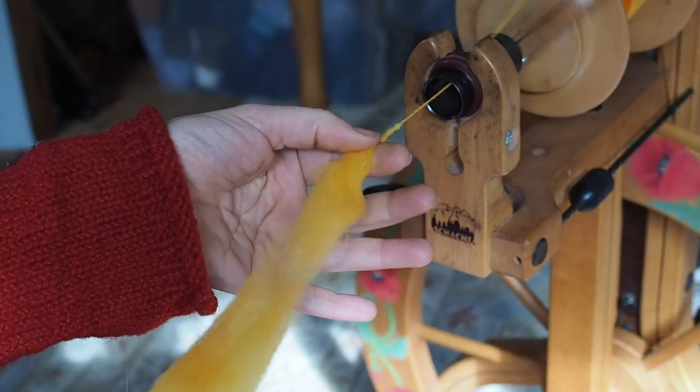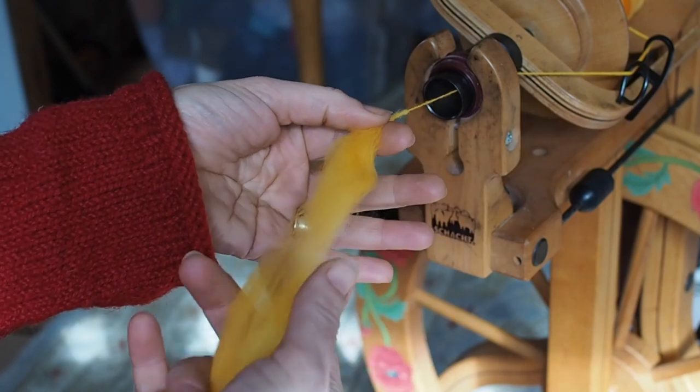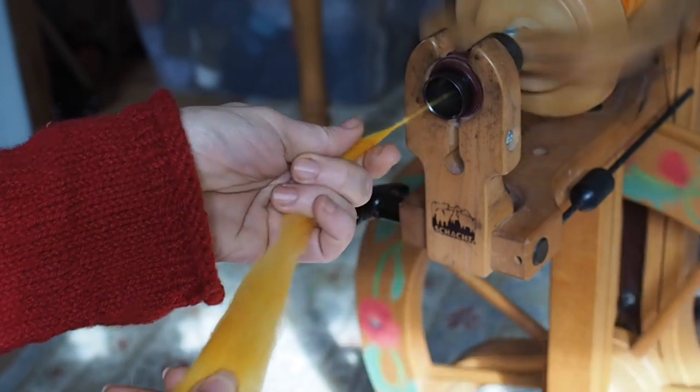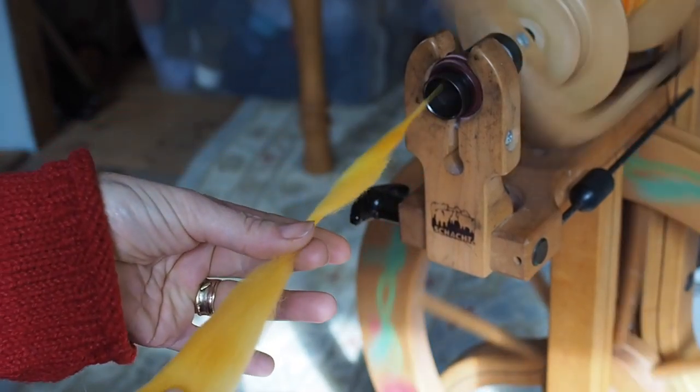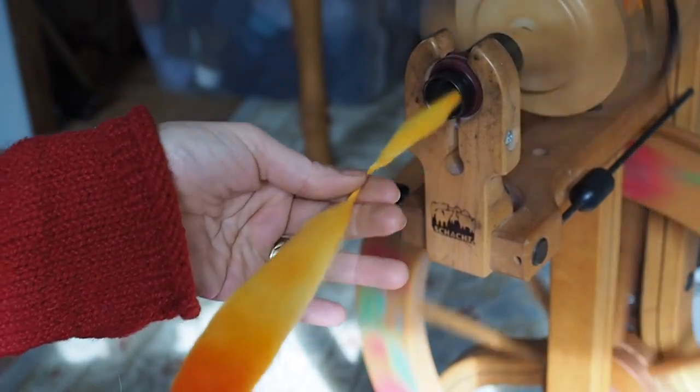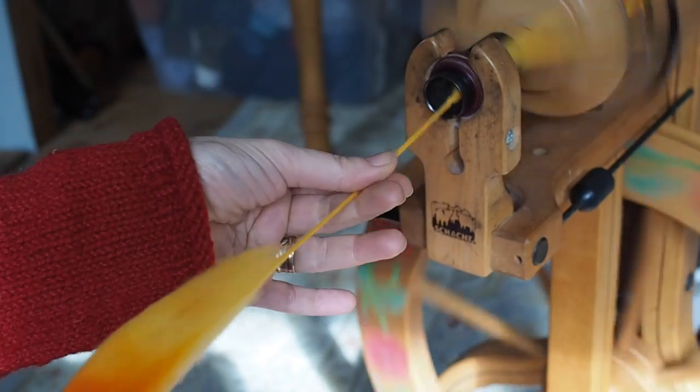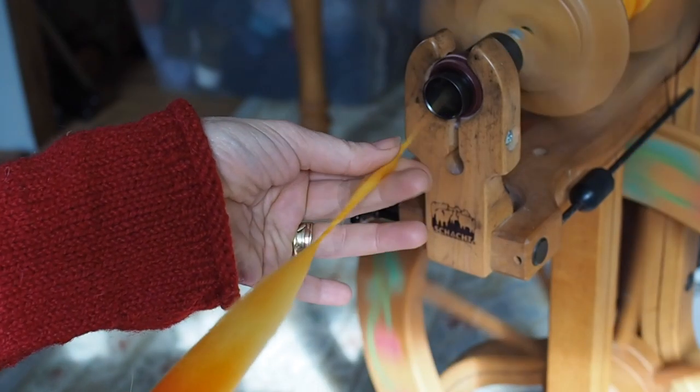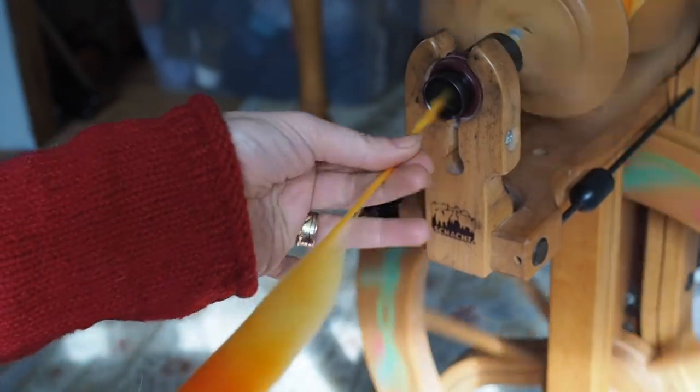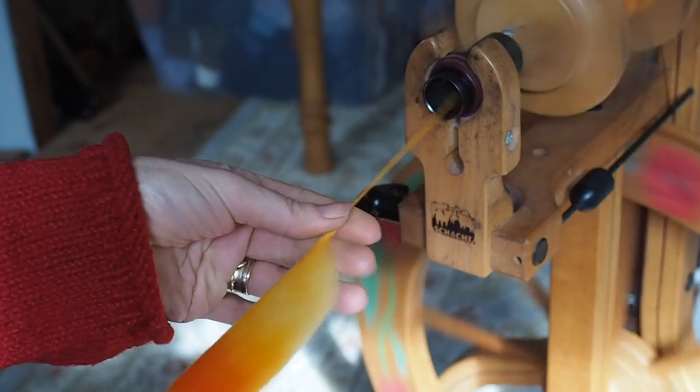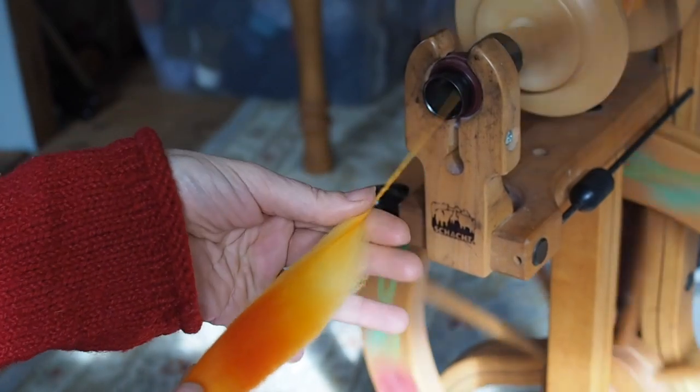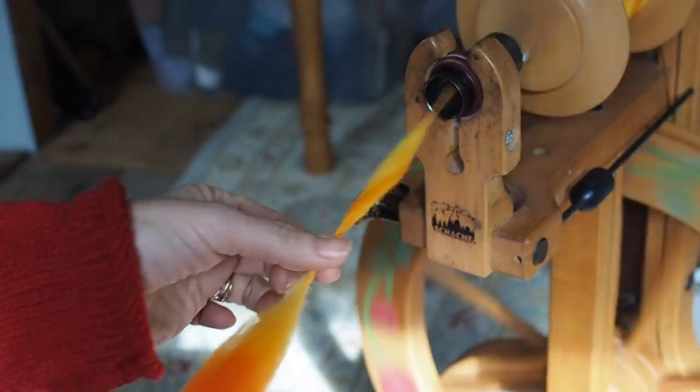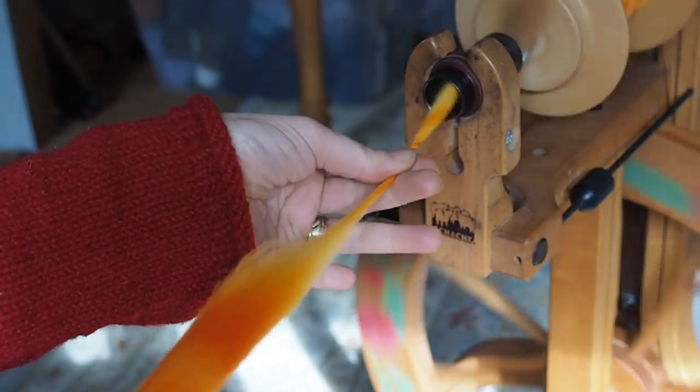When I start spinning, that twist wants to go to the path of least resistance which is where it's thinnest. Let me show you again. I'm pulling back, I'm going to grab the top and you see how it immediately starts going right there. Grab the top, pull it apart, you see how it's already spinning at that spot of least resistance.